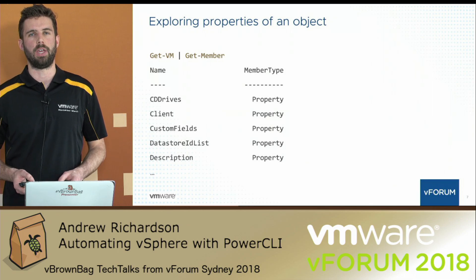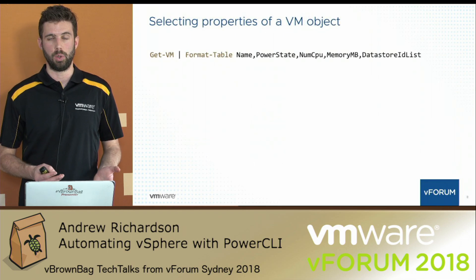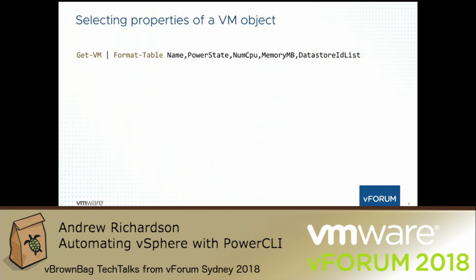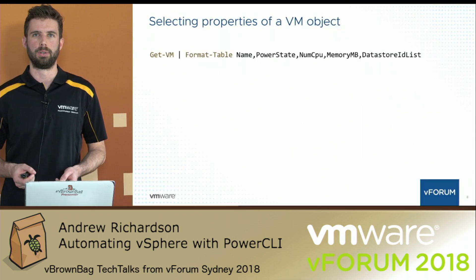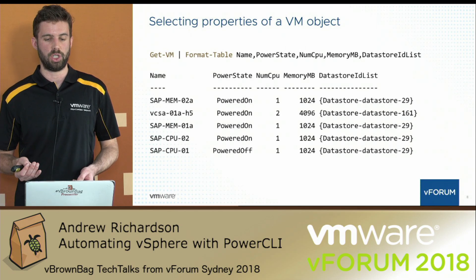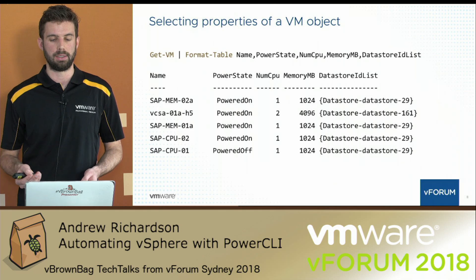Jumping ahead to selecting properties of a VM object — we've had a look at our VM objects and we know which attributes we want to select and filter down on. In this case we're doing Get-VM and piping that to the Format-Table cmdlet, which will format our output as a table. Now that we've explored the object, we know what properties are part of it, and we're selecting five different properties to use in our report. Running this command gives us a fairly simple report showing virtual machines, their power state, number of CPUs and memory, and the data store ID list.